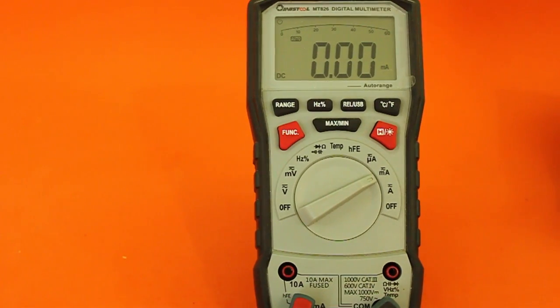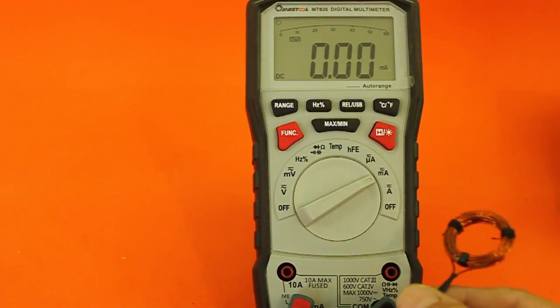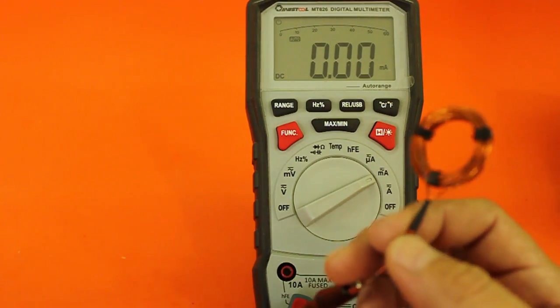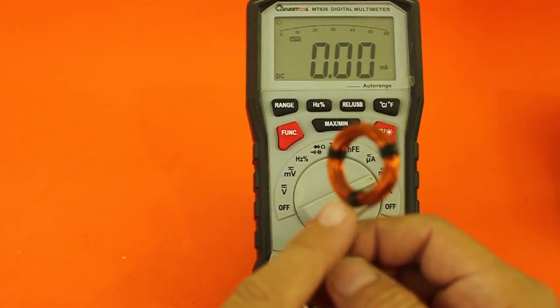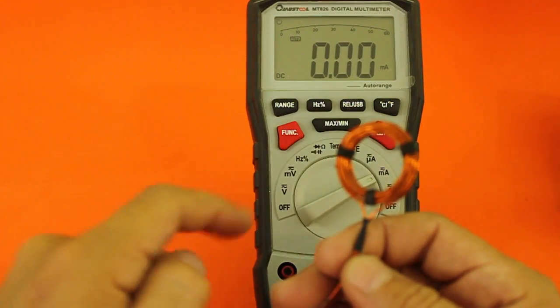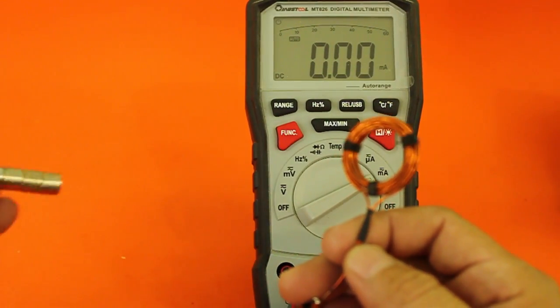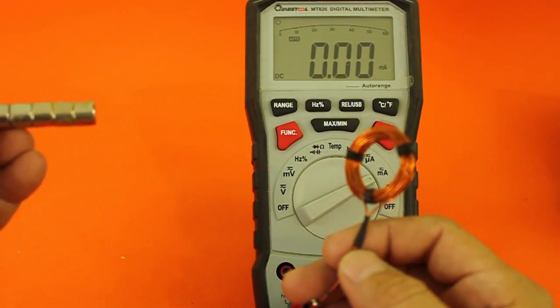Another concept we need to know is that when a magnetic field moves through a conductor, in the conductor is induced a current. Here I have this coil connected to the multimeter and I'm going to pass a magnet through the coil.